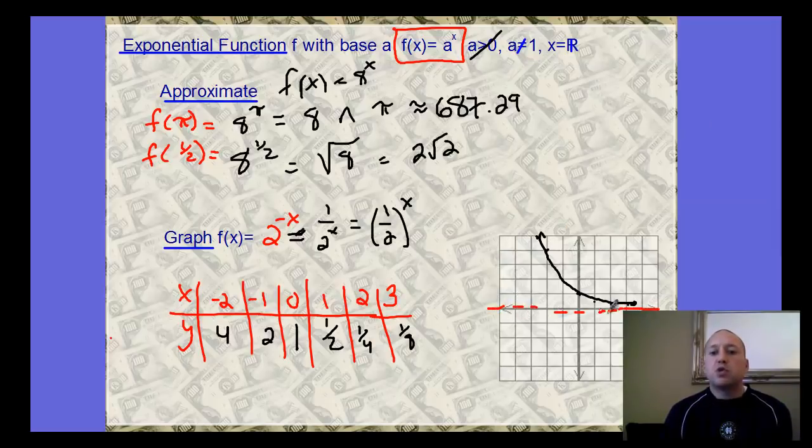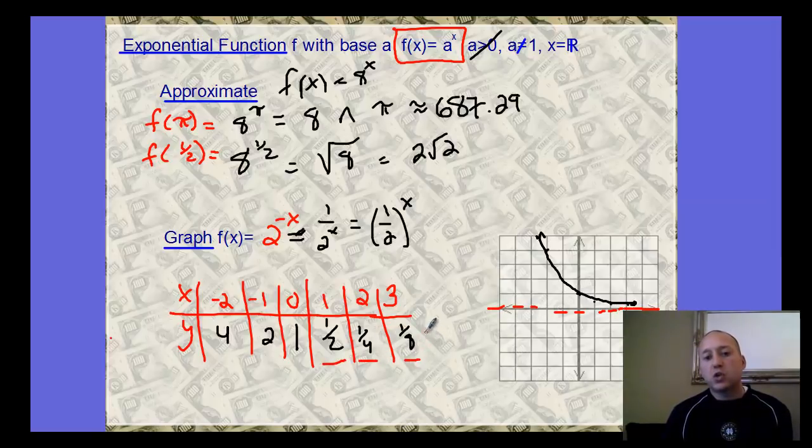If you haven't noticed, it's going to approach this. That's why this fraction is getting smaller and smaller and smaller. It's never going to actually reach 0. So there's actually a horizontal asymptote, which then helps us talk about domain and range.